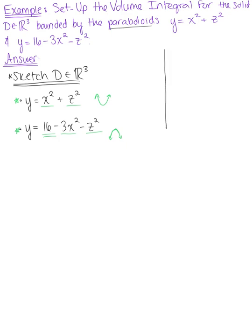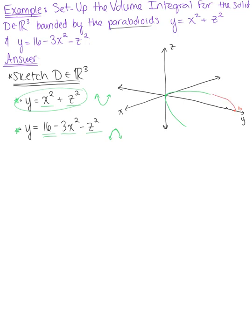Going ahead and sketching a graph with the z-axis, x-axis, and y-axis. Our first paraboloid starts at the origin — it's concave up. The second paraboloid opens downward and is centered around y equals 16. Drawing these in two dimensions first to get started, and then indicating the three-dimensional shape.